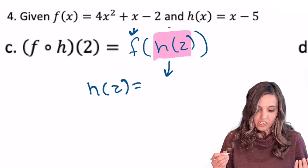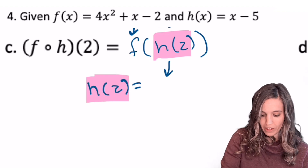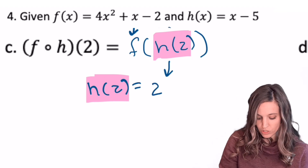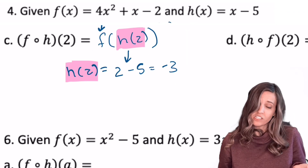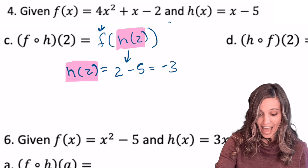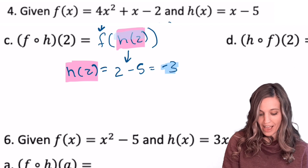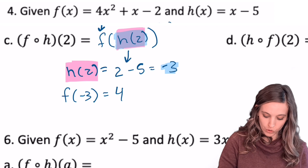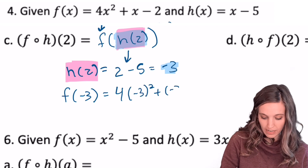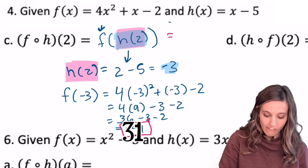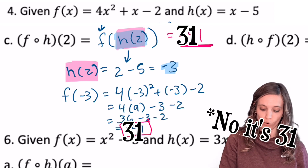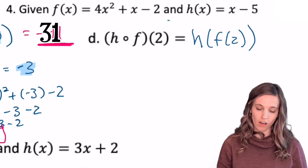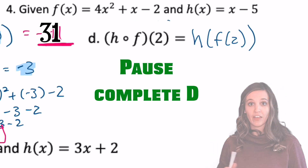Evaluating h of 2: replacing x with 2 in x minus 5 gives 2 minus 5, which is negative 3. Since h of 2 equals negative 3, we input that into f: 4 times negative 3 squared plus negative 3 minus 2. Evaluating that gives f of h of 2 equals negative 41. For part d, h of f of 2 — try it yourself, inside function first, then evaluate in the outside function. The answer is 11.